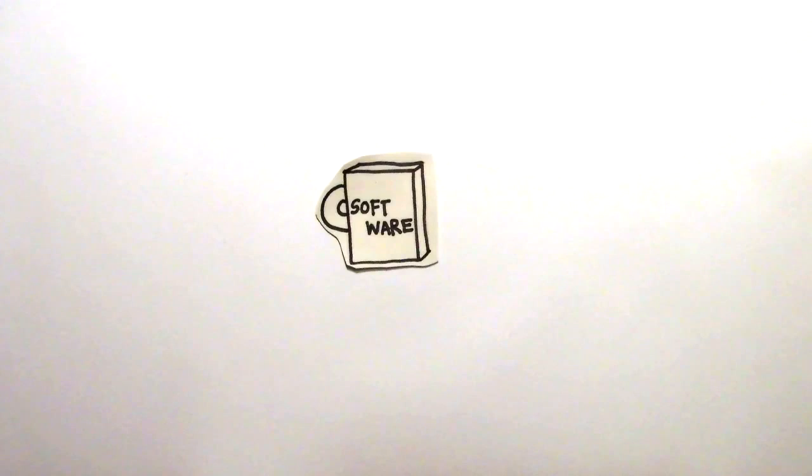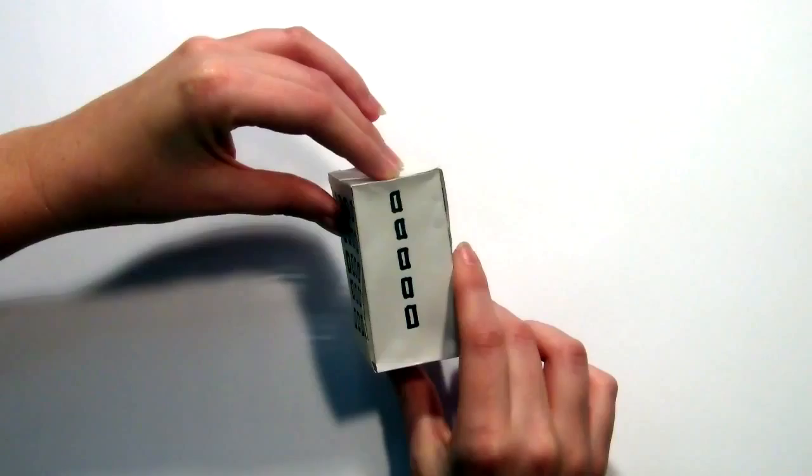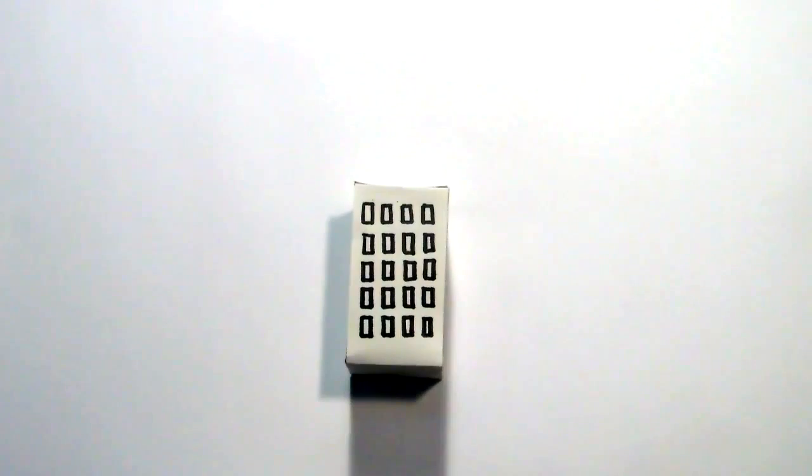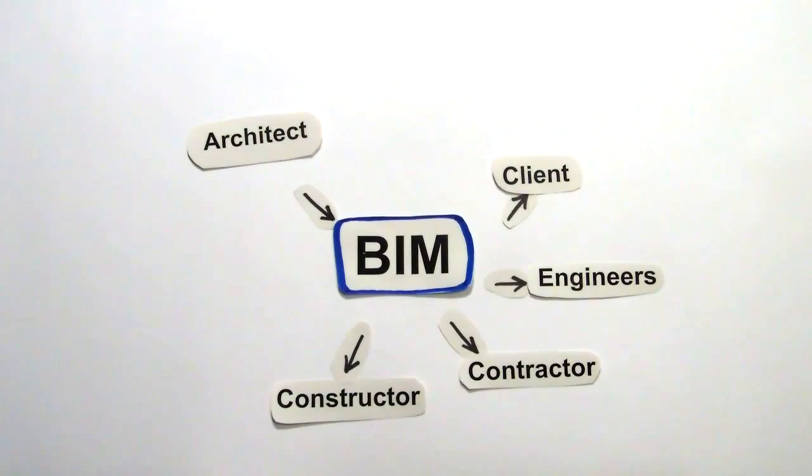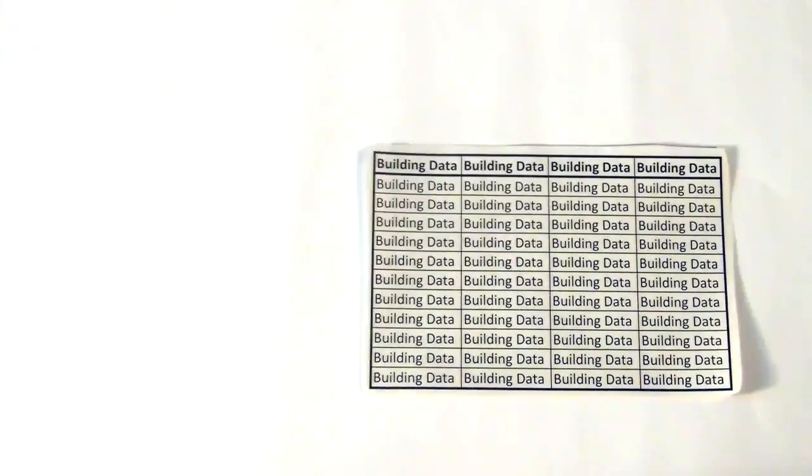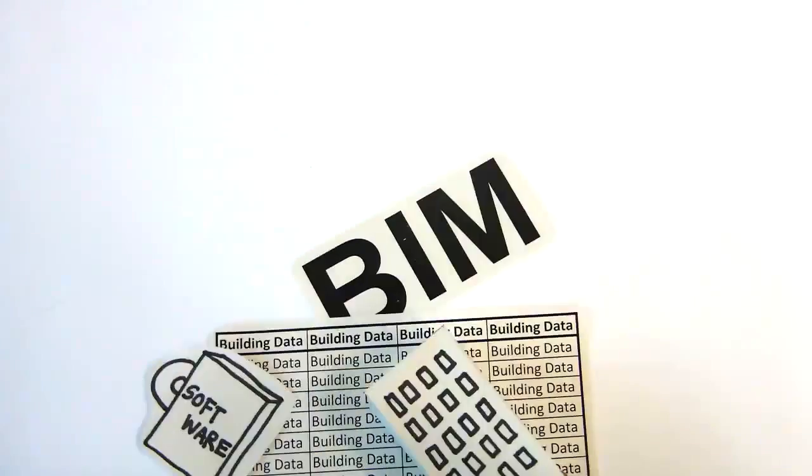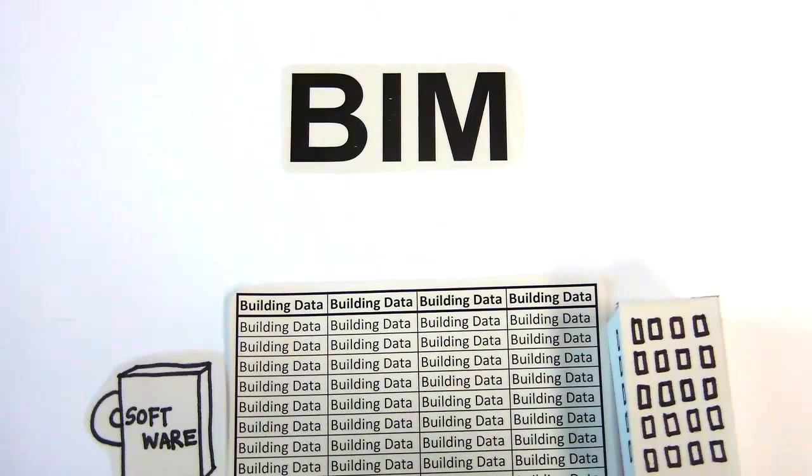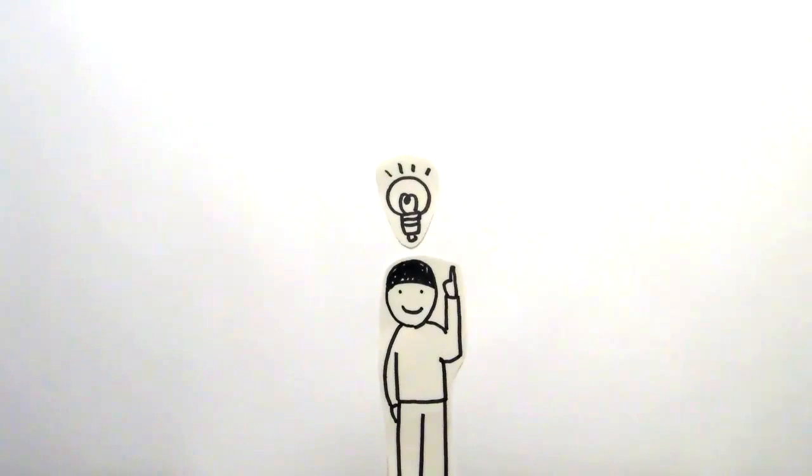Some say BIM is a type of software. Some say BIM is the 3D model of buildings. Others say BIM is a process or that BIM is nothing more than an organized collection of all building data. BIM is all of the above and more. Now let's see BIM explained in layman's terms.